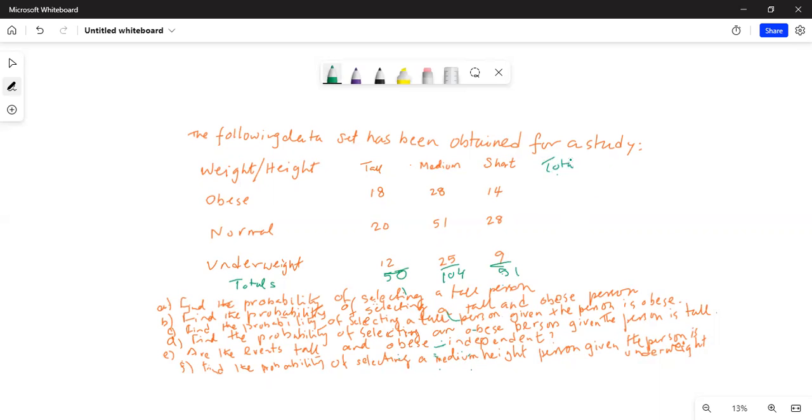Totals. 18 plus 28 is 46, plus 14 is 60. 20 plus 51 is 71, plus 28 is 99. Let me make sure I have done it correctly. 20 plus 51 plus 28.